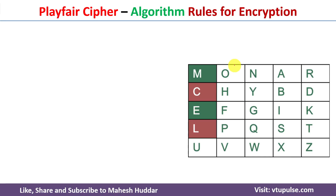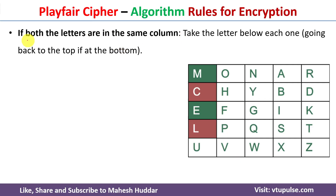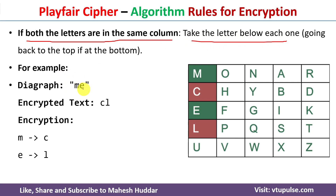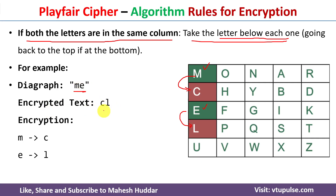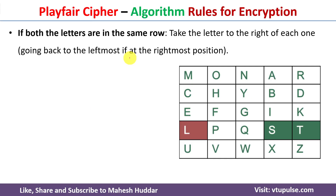Now we will understand the rules for encryption. If both letters of a digraph are in the same column, we take the letter below each one. For example, if the digraph is ME: M is present here and E is present here, both in the same column. So M is encrypted as C and E is encrypted as L. The encrypted text for digraph ME is CL.